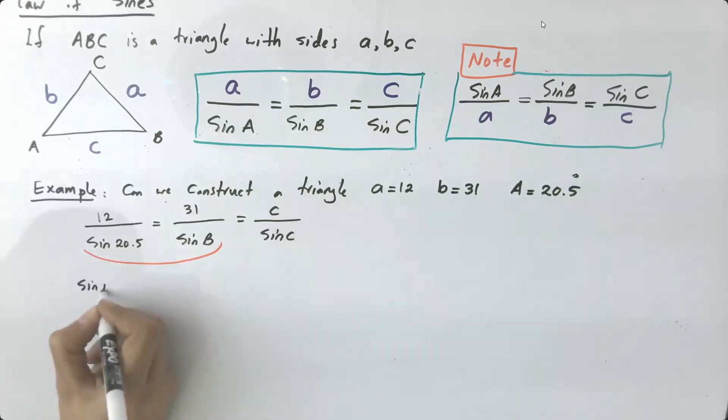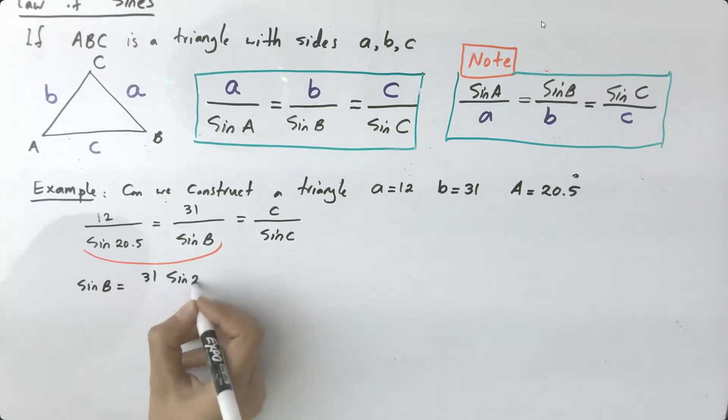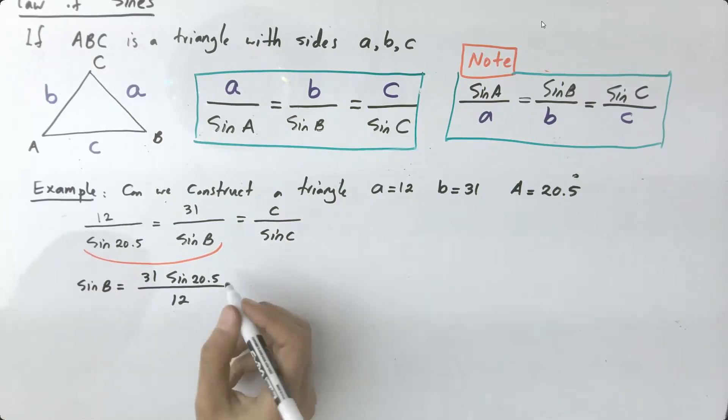So sine of angle B is equal to 31 times sine of 20.5 degrees divided by 12. If you do the calculation, this guy is approximately 0.990. Okay, so far so good.